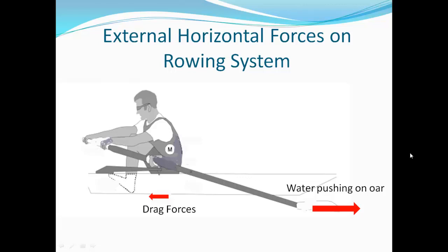The only external propulsion force acting on the system as a whole is the force of the water pushing on the end of the oar. The exact interaction of the oar with the water is quite complex — it involves hydrodynamic lift forces, vortex shedding, and components of forces that are not parallel to the boat's velocity — but these details are beyond the scope of this discussion. Opposing the motion of the boat are resistive forces known as drag, which appear in three forms: skin drag, form drag, and wave drag.